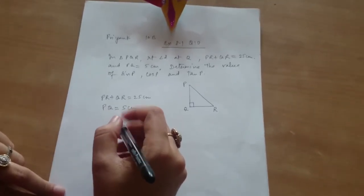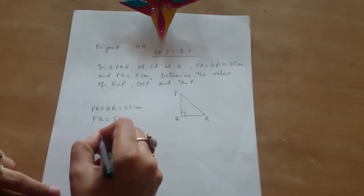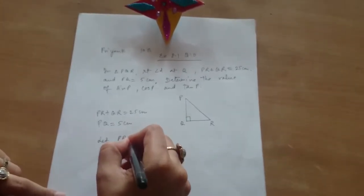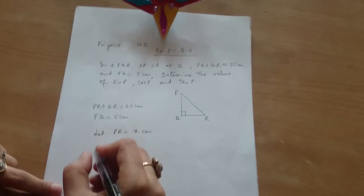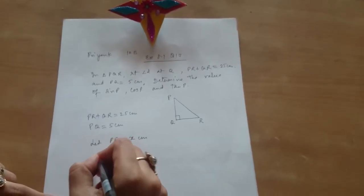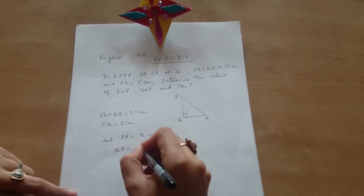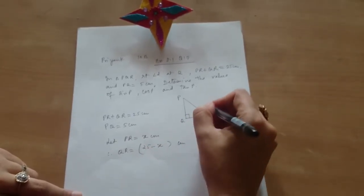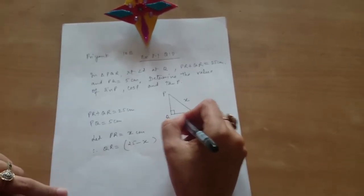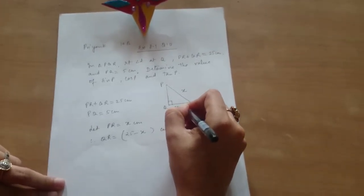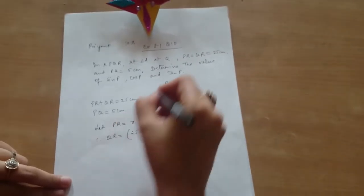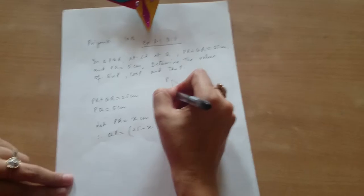Tell me how you will do this. First of all, we let PR be X. Let PR equals X cm. And QR? Therefore QR will be 25 minus X cm. So you have taken X and QR will be 25 minus X, and this is given to be 5 cm.